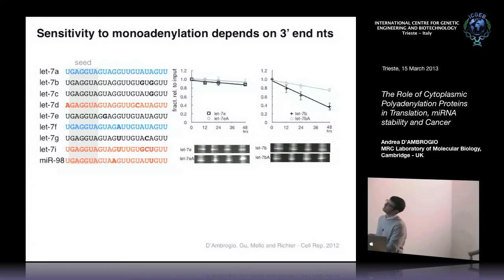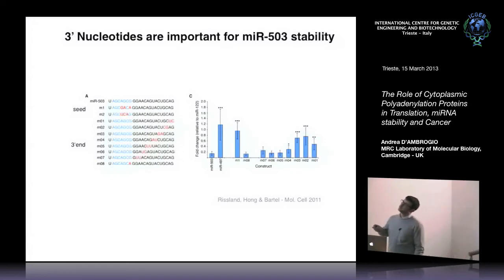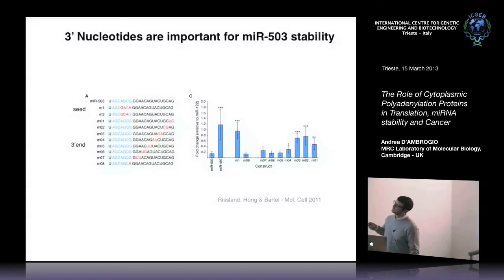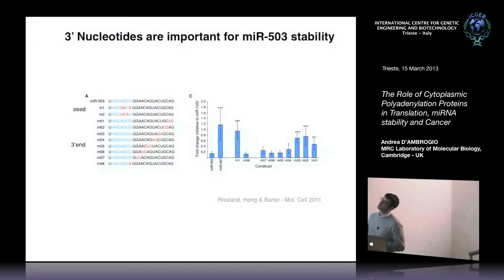These results are very similar to something described in the Bartel lab, where they made point mutations at every position from 1 to 22 in a microRNA. They found that mutations at the very end of the microRNA cause changes in stability, meaning nucleotides at the 3' end are really important for microRNA stability, but not those in the center — although nucleotides in the seed are also very important for stability.